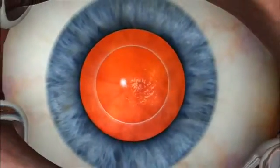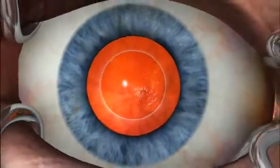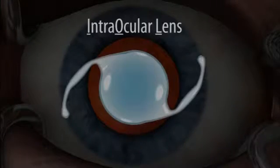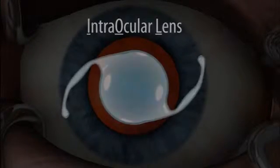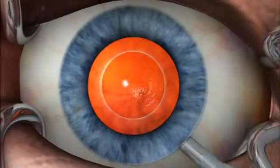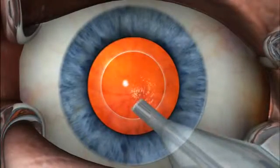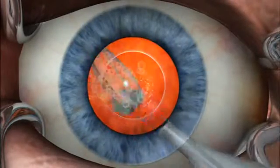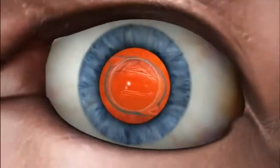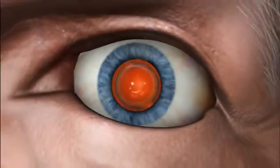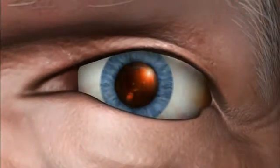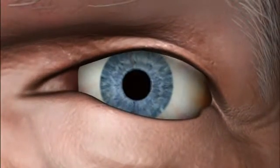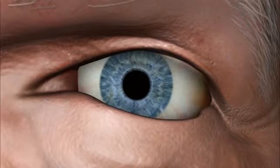Once the cataract is removed, an intraocular lens, or IOL, will be placed into the empty lens capsule. Small struts will hold it in place. Once properly positioned, the synthetic IOL restores the patient's vision.